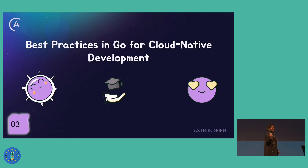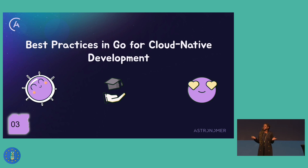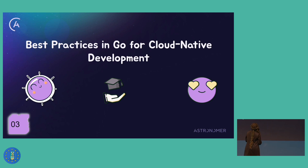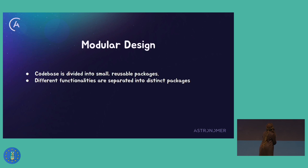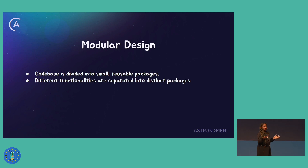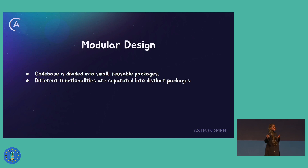Next, best practices in Go. The key to effective cloud-native development is to leverage the language's strengths — things like its concurrency and Go packages. But for our talk, I want to focus on more general best practices. One focus today is modular design. We have modularized our codebase into small, reusable packages: we have the API, the provisioner, the proto for our RPC communication. We've also separated things based on functionality — for Helm operations and for Kubernetes integration, we have separate modules.